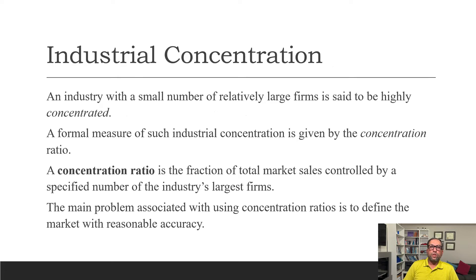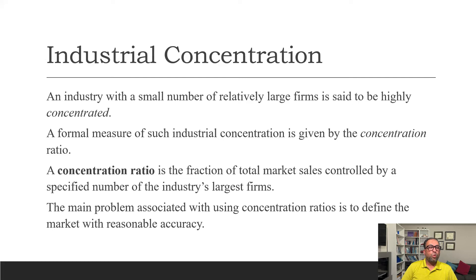To measure whether an industry is concentrated, we use concentration ratios. The most common is the four-firm concentration ratio: we take the top four firms in the industry, add up their sales, and divide by the total sales of the industry. If we get figures like 60, 70, 80, or 90 percent, we can say the market is very concentrated — a major portion is in the hands of very few firms. If the ratio is very small, like 5 or 10 percent, the market is spread among many firms.